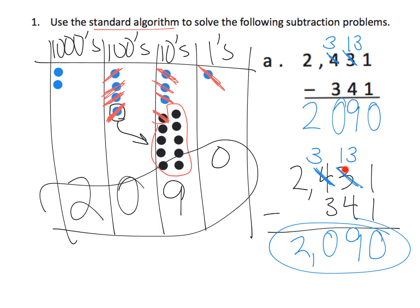Now, I want you to notice: earlier I said we have 3 tens, 3 take away 4 — you can't do that. Well, yes, technically you can do 3 take away 4; that's negative 1. But that's down the road. In this context, we're saying I have 3 tens — 3 dots — take away 4 dots. In this physical context, we're going to say you can't do that. I feel comfortable as a mathematician saying that, as long as students understand why: it's because we're talking about physical dots.